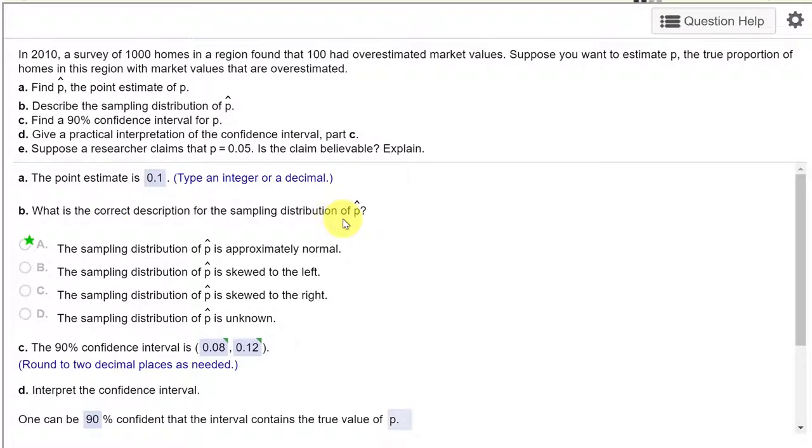And then the correct description of the sampling distribution of P, it's approximately normal because we've got an N of 1,000 and if it's more than 30 then that means we can approximate the distribution with a normal distribution.